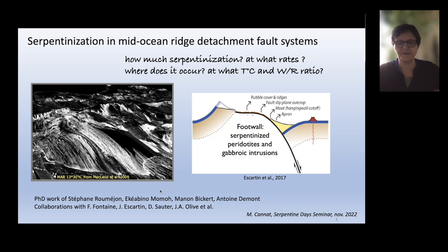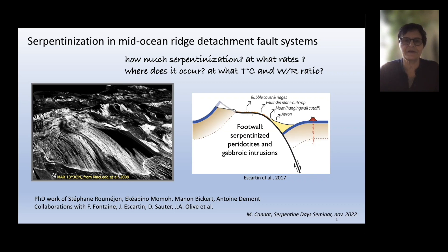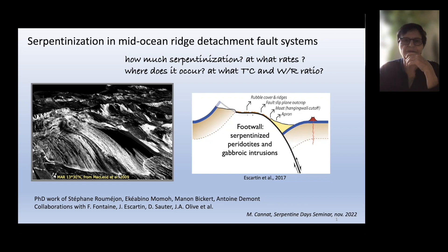The first slide shows a currently active detachment fault at the axis of the mid-Atlantic ridge at 13 degrees north. You can see this corrugated surface that emerges from the seafloor — the hanging wall plate on one side is covered by basalt, and this corrugated surface forming a dome exposes serpentinized peridotite but also gabbroic intrusions, dolerites, etc. The cartoon shows what's going on there.